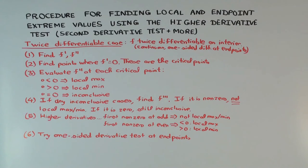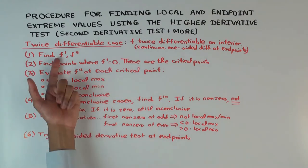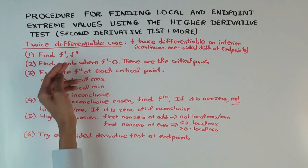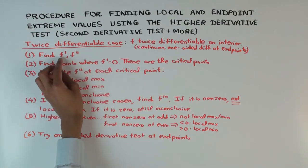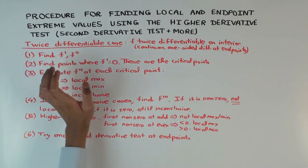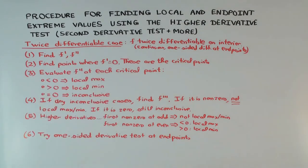Finally, you have to settle the endpoints. For the endpoints, you can use the one-sided derivative test. Since you already calculated f prime, if the derivative extends continuously to the endpoints, you can evaluate f prime at the endpoints or use one-sided derivatives to figure out whether it's an endpoint maximum or minimum. Generally, you don't use the second derivative test for endpoints.